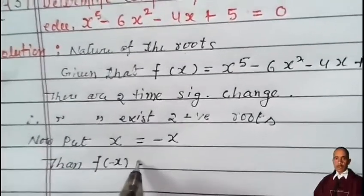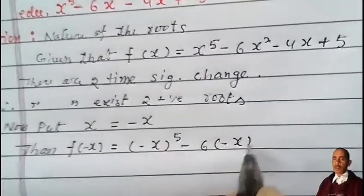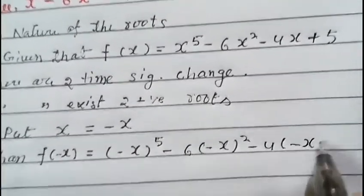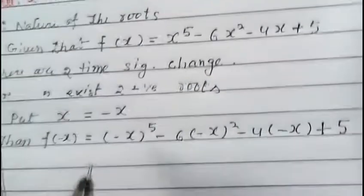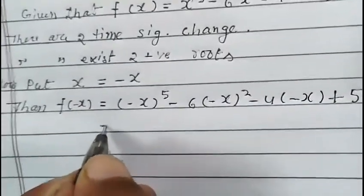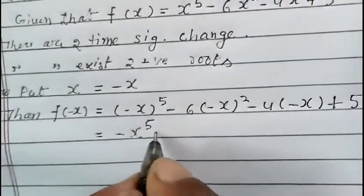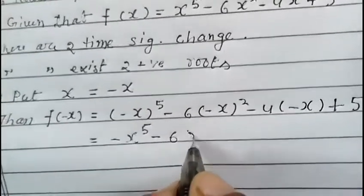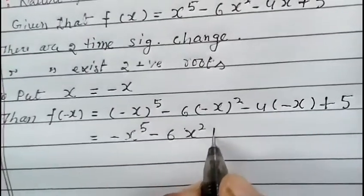Now put x equal to minus x. Substituting, we get f(-x) = minus x to the power 5 minus 6x squared plus 4x plus 5. We now analyze the sign changes in this expression.